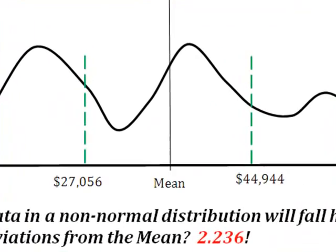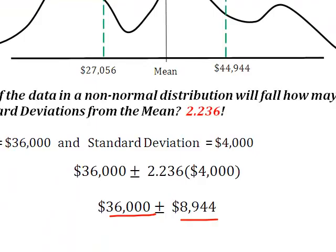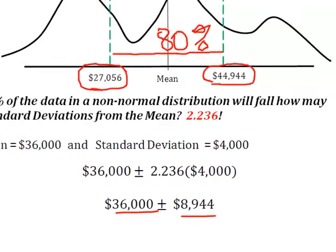Drum roll please. I can now say that 80% of the price of mid-size luxury automobiles, based on this distribution, fall between the values of — I've taken my $36,000 plus or minus my 2.236 standard deviations — so 80% of the price of these mid-size luxury vehicles will fall between $44,944 and $27,056, even though I have a non-normal distribution, by applying Chebyshev's theorem.